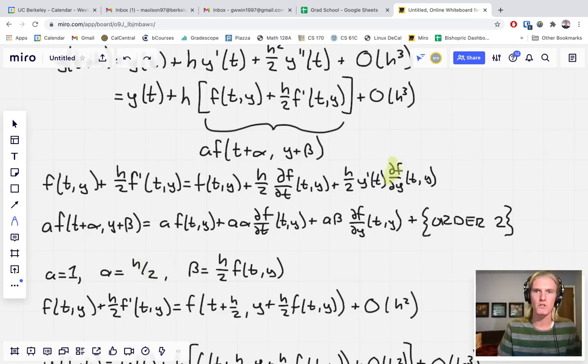Finally, again, we want to match this term, the partial with respect to y, to partial with respect to y. A is one. So all we're left with is h over two times y prime, it's mapped right on to beta. So we're left with these down here, one, h over two. And remember that y prime is defined to be f. So we're left with beta equals h over two times f(t,y).